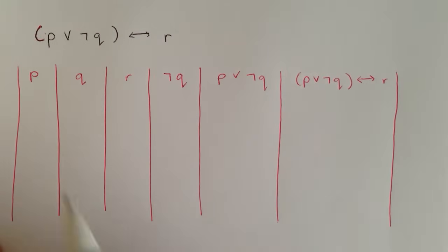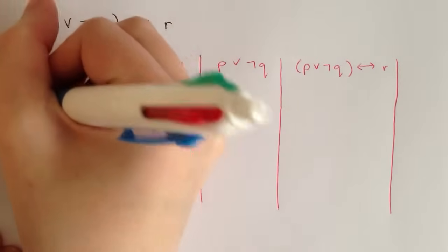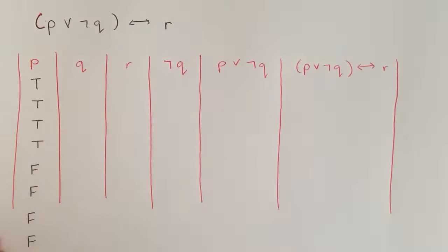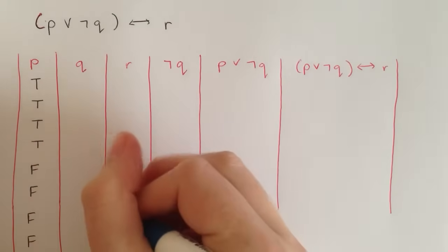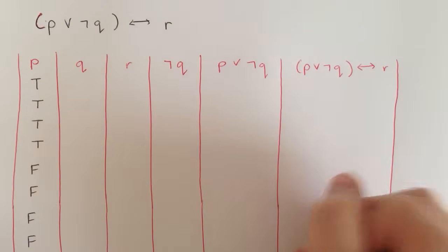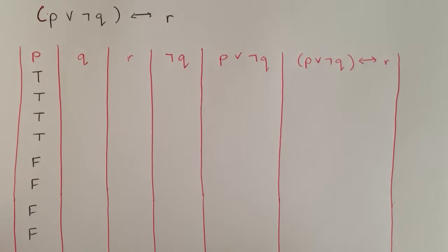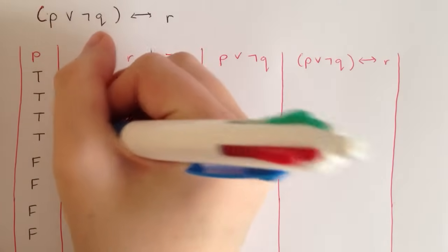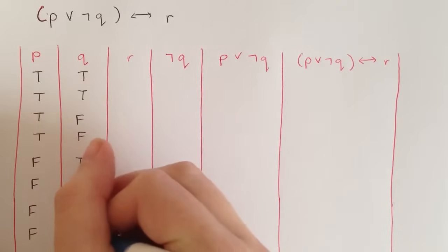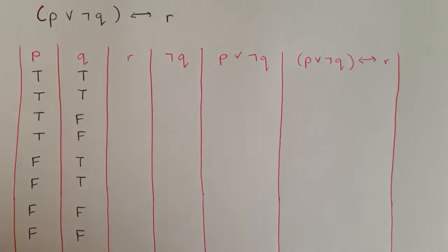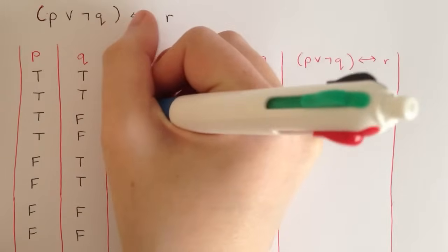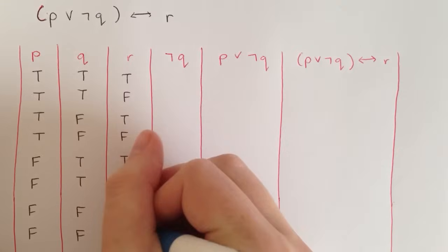Since we've got three different letters, we need more rows. For the p column we go: true, true, true, true, false, false, false, false. For the q column: true, true, false, false, true, true, false, false. For the r column we do one and one: true, false, true, false, true, false, true, false.